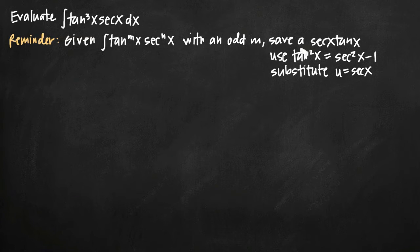When you have an odd power of tangent, you can follow these three steps as a strategy for evaluating this type of integral. So your first step is going to be to save a factor of secant of x times tangent of x. Then with what remains, we're going to use this trigonometric identity, tangent squared of x equals secant squared of x minus 1, to make a substitution and get everything in terms of secant. And then we're going to substitute u equals secant of x.